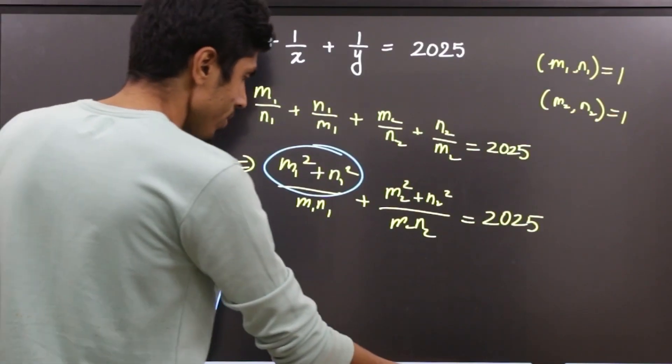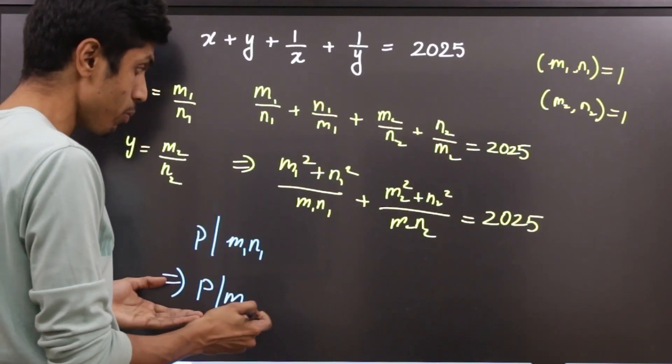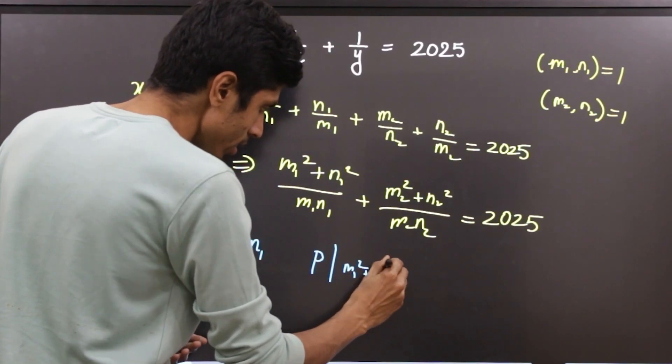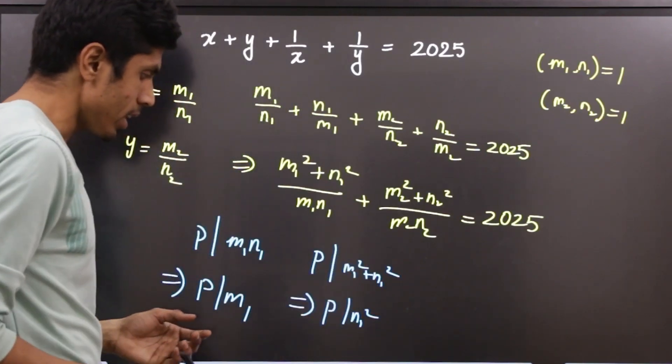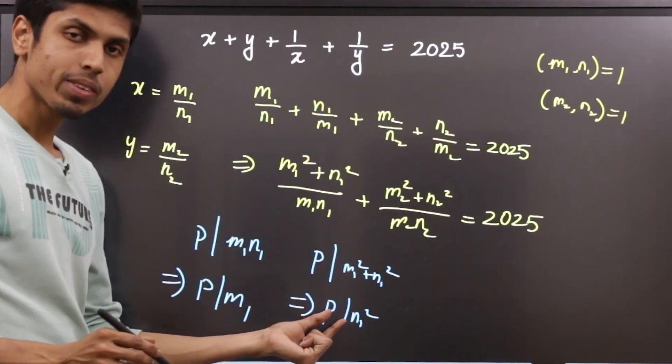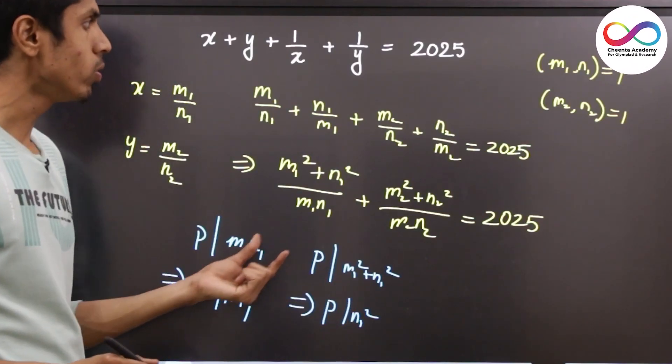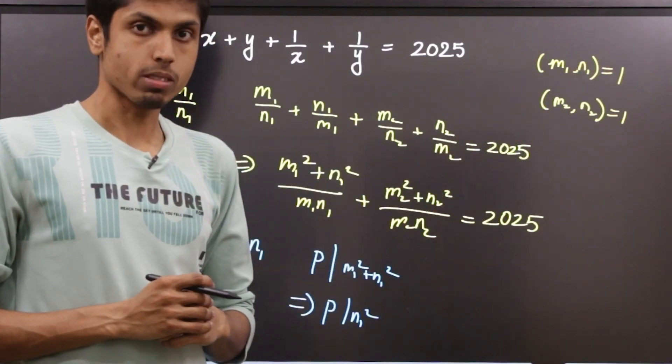Then can it divide m1² + n1²? No, because prime p is already dividing m1 as per our hypothesis. That would imply prime p must divide m1², and therefore the prime p is present in the prime factorization of both n1 and m1, leading to a contradiction in accordance with our assumption.